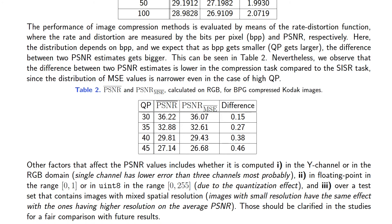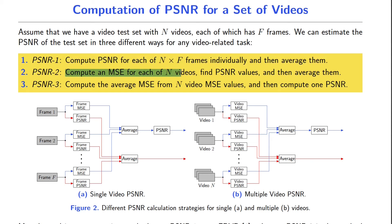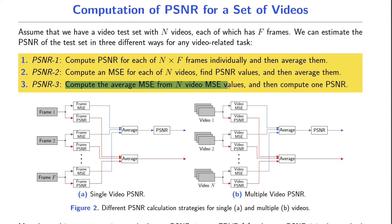Now let's move to the video case. For N videos each of which has F frames, we can estimate the PSNR in three different ways. We can compute PSNR for each of the N×F frames individually and then average them. Or, we can compute an MSE for each of N videos, find the corresponding PSNR values, and then average them. Or, we can compute the average MSE from N video MSE values and then compute a single PSNR. In Figure 2, we can see the pipelines for those computation methods.